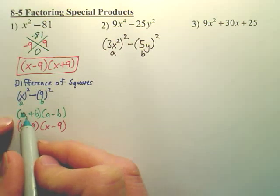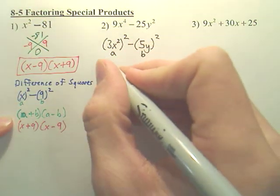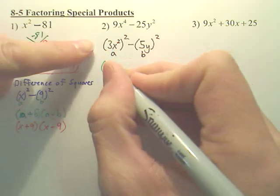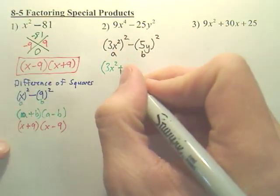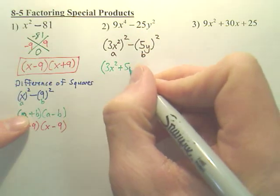According to the formula, right down here, a plus b, a minus b. Our answer will simply be a, which is 3x squared. b, which is, put a plus, put a plus. b is 5y.